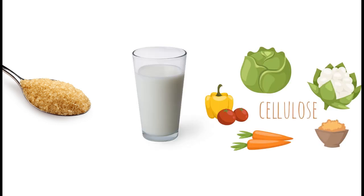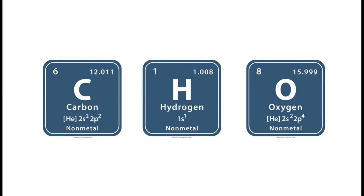Carbohydrates such as table sugar, lactose in milk, and cellulose are all made of carbon, hydrogen, and oxygen.